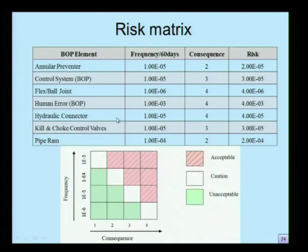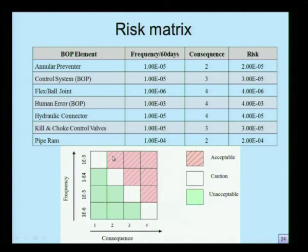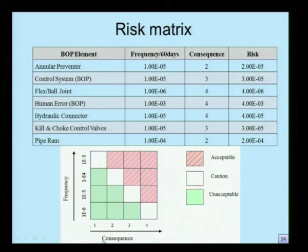I can also plot the risk matrix with the x-axis showing the consequence and the y-axis showing the frequency. Whatever regions are shown in dark are considered to be an acceptable region. The white regions are the region with caution, and the green regions in this matrix are the unacceptable region. A consequence of very low frequency is also not acceptable. Based on the risk matrix estimated for different elements of BOP, I can estimate and plot what we call a risk matrix.